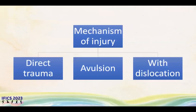Regarding mechanism of injury, direct trauma is extremely rare. More commonly, it is a valgus injury following a fall on the outstretched hand. It can also occur in association with dislocation of the elbow joint.